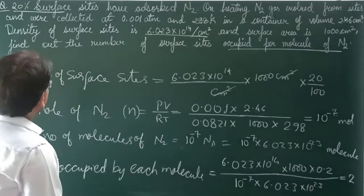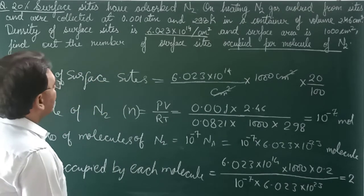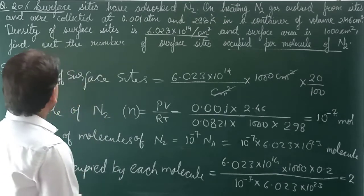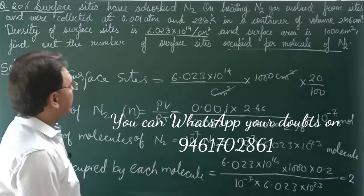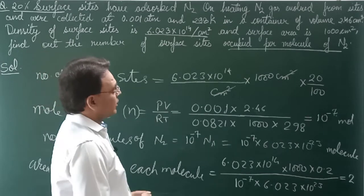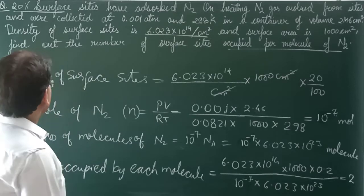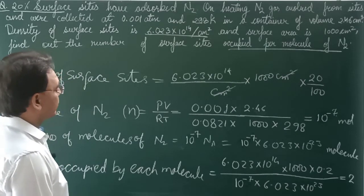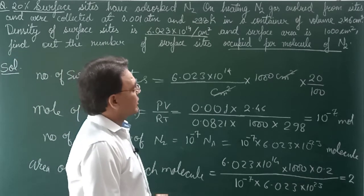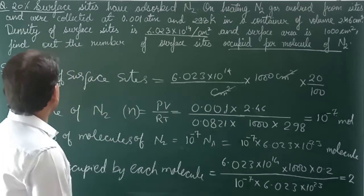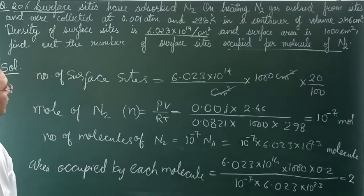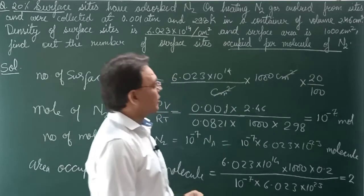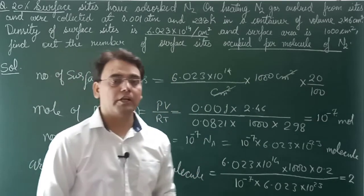Our question is here: 20% surface sites have adsorbed N2. On heating, N2 gas evolved from sites and were collected at 0.001 atm and 298 Kelvin in a container of volume 2.46 cm³. Density of surface site is 6.023×10¹⁴ per cm² and surface area is 1000 cm². Find out the number of surface sites occupied per molecule of N2. One molecule has occupied how many surface sites - this we need to find out.